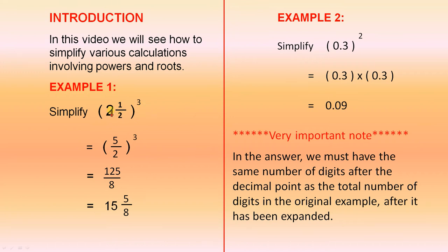So we change 2 and a half to 5 over 2. 5 cubed is 125. 2 cubed is 8. 125 over 8 is 15 and 5 eighths.